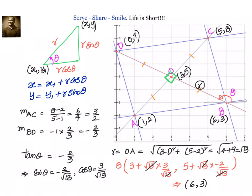In this problem, given (1, 2) and (5, 8) as opposite vertices, we first found the midpoint: x = (1+5)/2 = 3 and y = (2+8)/2 = 5, giving midpoint (3, 5) — a point on line BD. To find sinθ and cosθ, we needed the slope of BD. We started with slope of AC = (y2-y1)/(x2-x1) = 3/2, then slope of BD = -2/3, since diagonals bisect each other at 90° in a square.